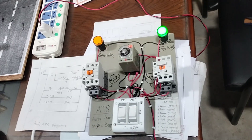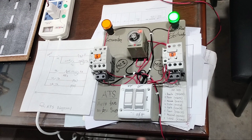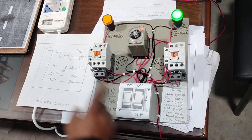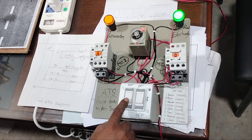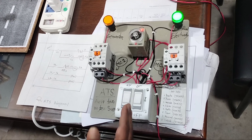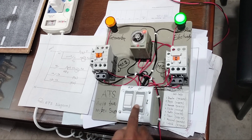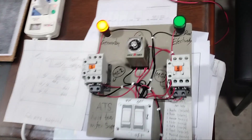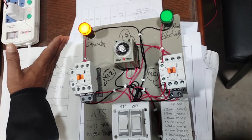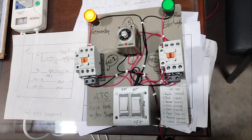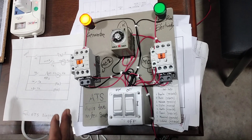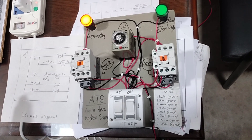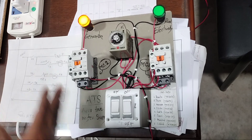We are using the current bulb on the generator line. The current bulb is using the generator light. Now we are using our industry — all of our other motors and equipment. All of our equipment is working on the generator line and the current is running automatically.